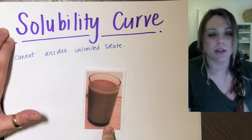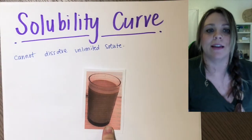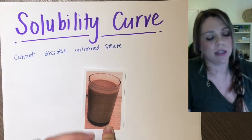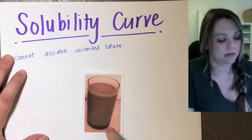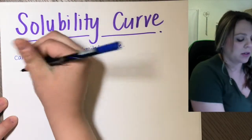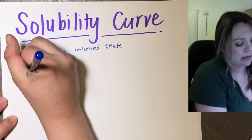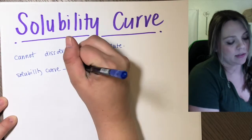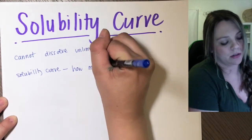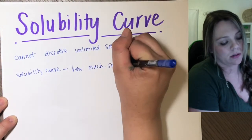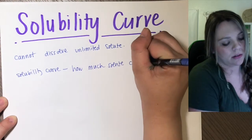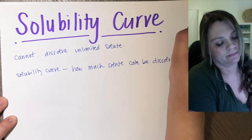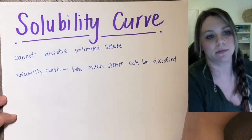The solubility curve basically tells us exactly how much solute can be dissolved in an amount of solvent. That's what a solubility curve actually tells us - how much solute can be dissolved, which is very useful.